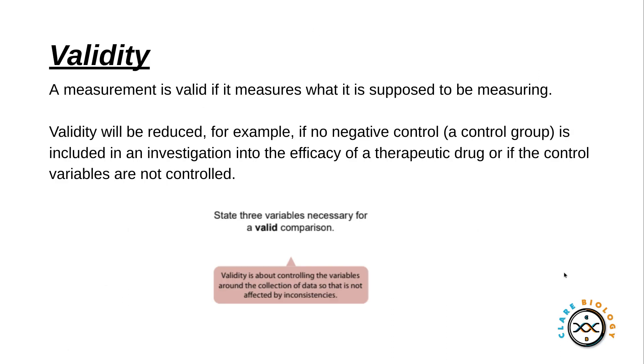Validity. This is where a measurement is valid if it measures what you're supposed to be measuring. Now the key things here are talking about control groups and control variables. If you don't have a control group and you don't control your control variables enough, it means you will not get a valid experiment and valid data. So quite often you get asked how can I improve an experiment to create a more valid conclusion or valid results.